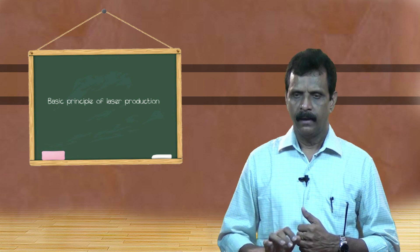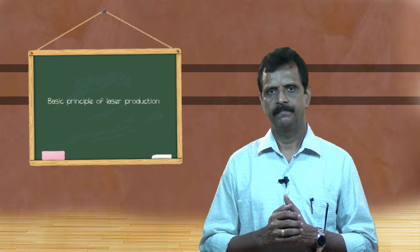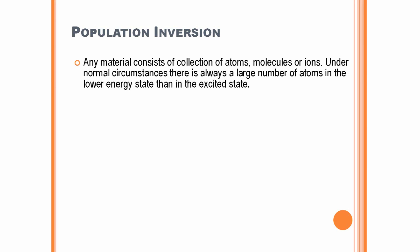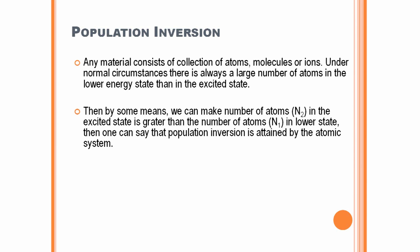Usually in materials or in matter, atoms or molecules exist in large numbers. Out of these atoms or molecules, majority will be in the ground state, whereas a few atoms will be in the higher energy state. So at ordinary temperature, most of the atoms in a system remain in a lower energy state and fewer atoms in the higher energy state. But population inversion is when there are more atoms in the excited or higher energy state compared to atoms in the lower energy state, and this situation is called population inversion.